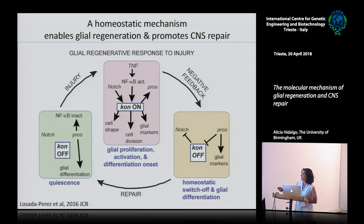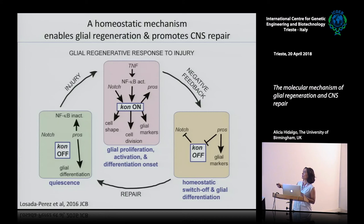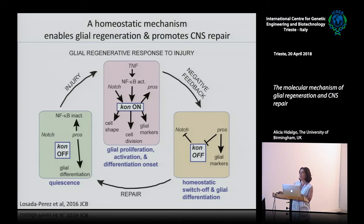Contiki also activates Prospero and inhibits Notch, kicking off a negative feedback. It represses Notch, which stops the increase in Contiki - stopping proliferation. And because Contiki activates Prospero, and Prospero inhibits proliferation, together this switches off proliferation. You switch off Notch, activate Prospero, and switch off Contiki - essentially switch off proliferation. Prospero directly regulates glial differentiation markers. This is homeostatic - it restores the initial conditions. Contiki off, Notch and Prospero on, and the cells are now ready to respond to injury again.